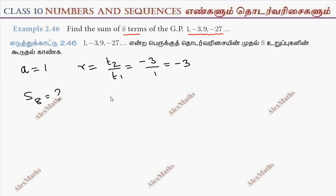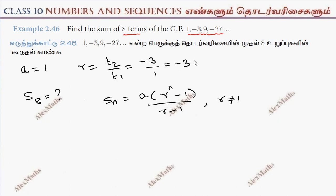Now we have to find the sum of 8 terms. The formula is S8 equals A into r power n minus 1, divided by r minus 1, where r is not equal to 1. Substituting: S8 with n equals 8, A equals 1, r equals minus 3, so we get 1 into (minus 3) whole power 8 minus 1, divided by minus 3 minus 1.